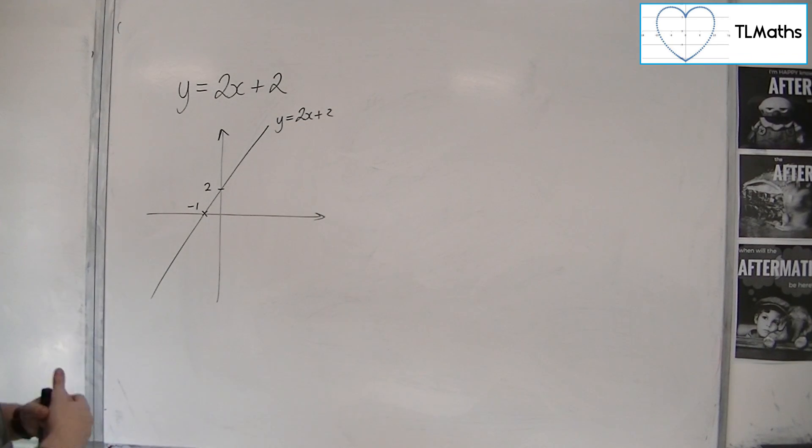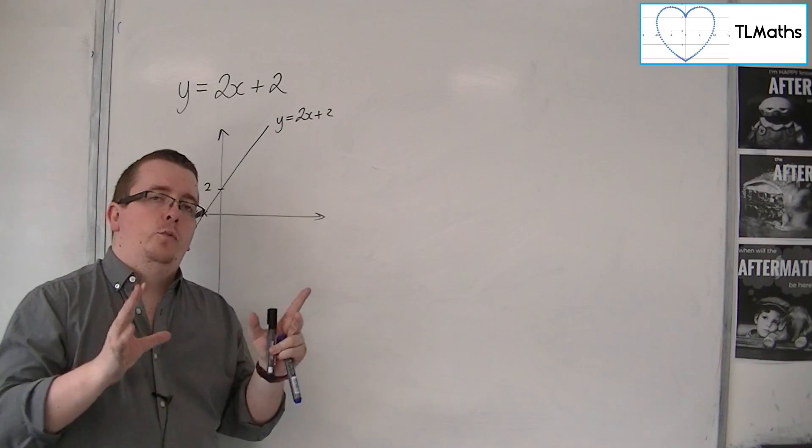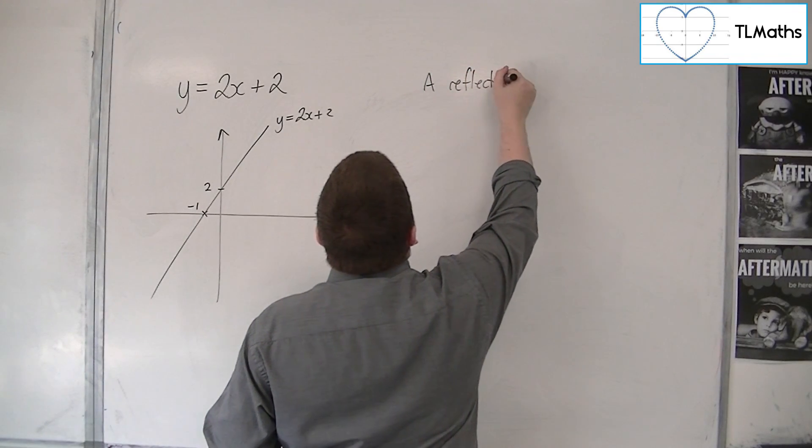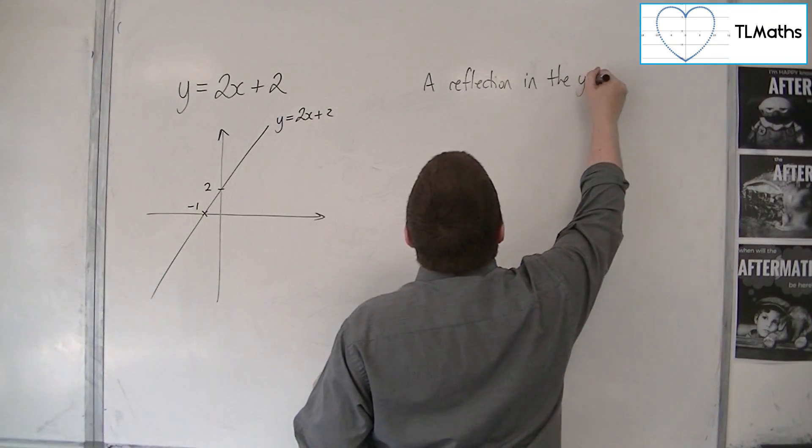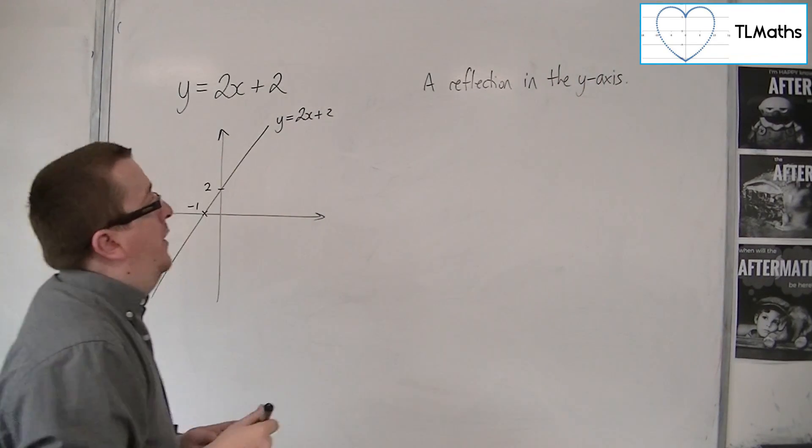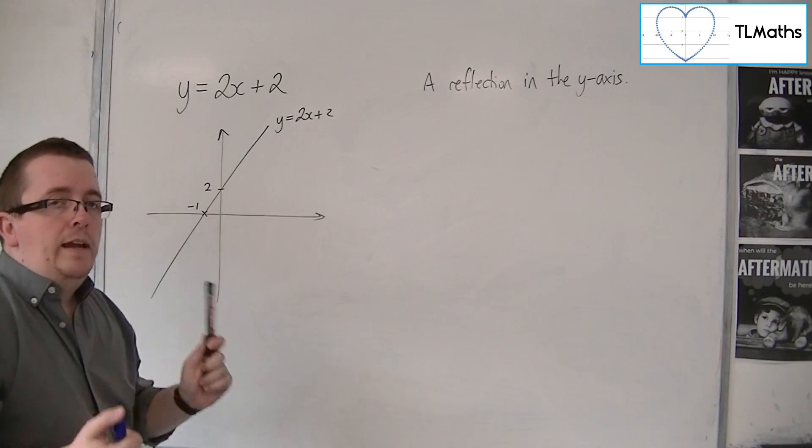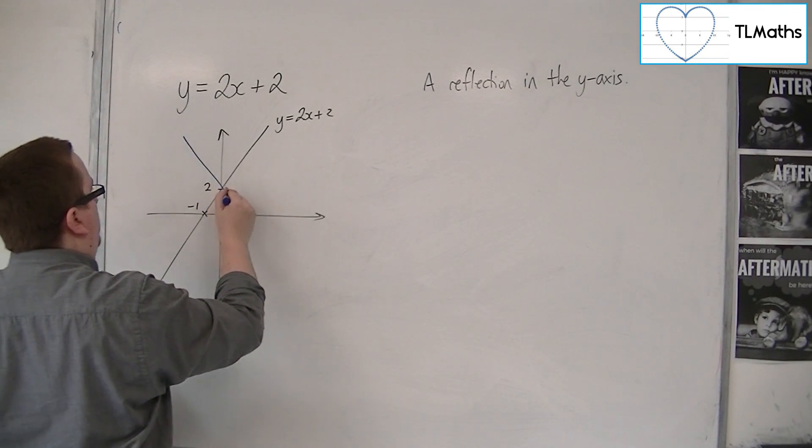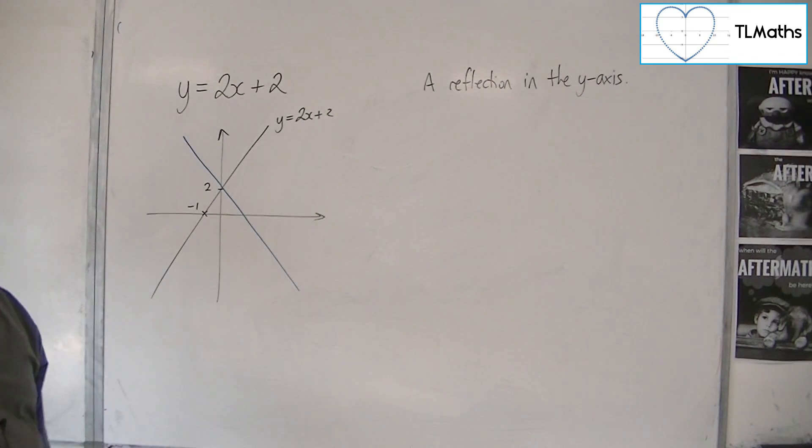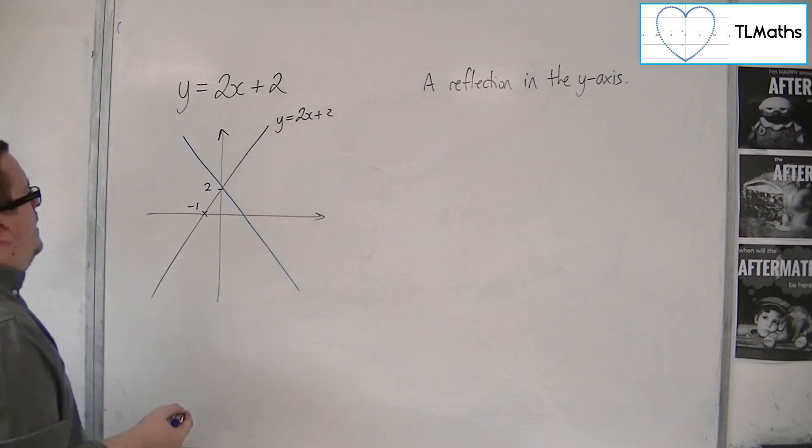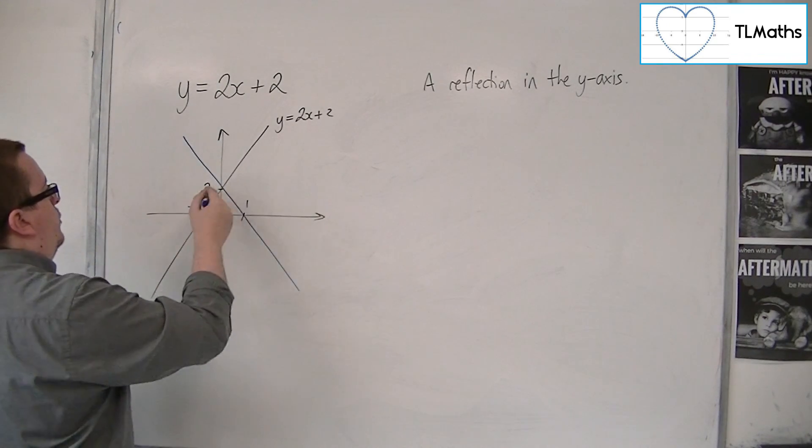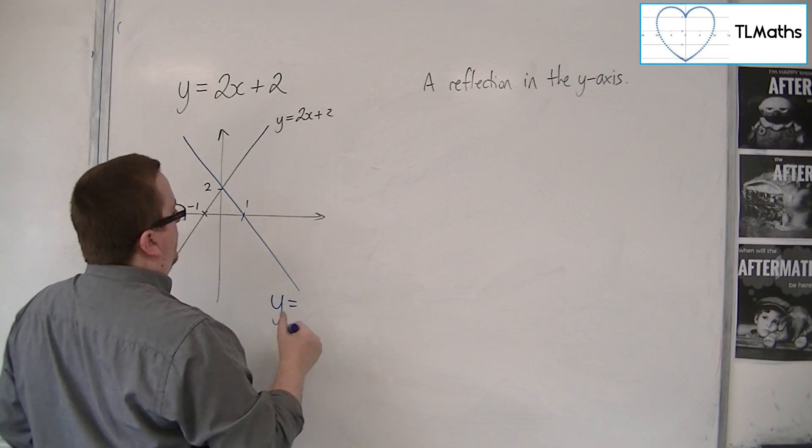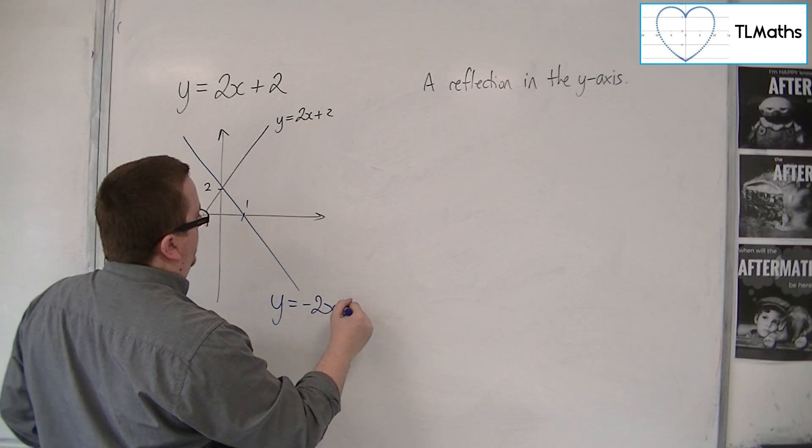Now, there are two main types of reflection that we need to look at. The first is a reflection in the y-axis. OK, so if I was going to reflect this line in the y-axis, then it is clear that it would look something like this. OK, so that's what it would look like. So this point would now be 1. That point would still be 0, 2.